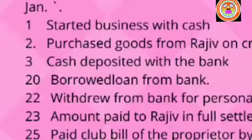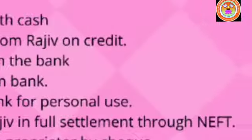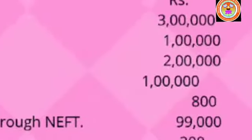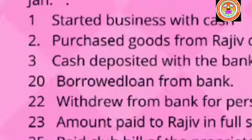Today we are going to learn sum number 10 from your book, page number 61. Raja has a hotel and the following transactions took place in his business. We have to journalize them. Raja is the proprietor and he is doing hotel business.